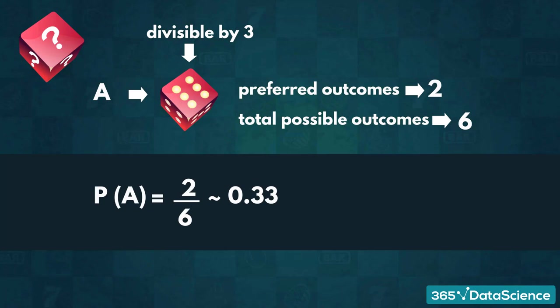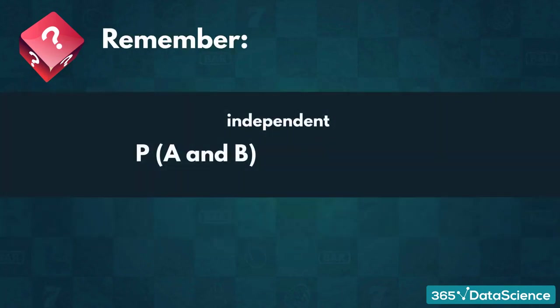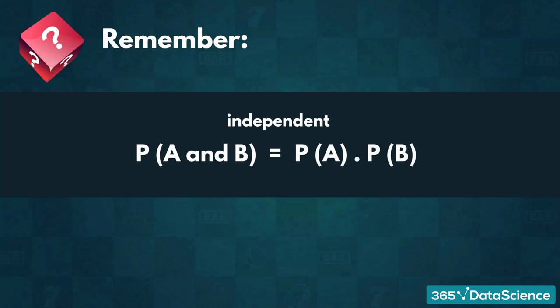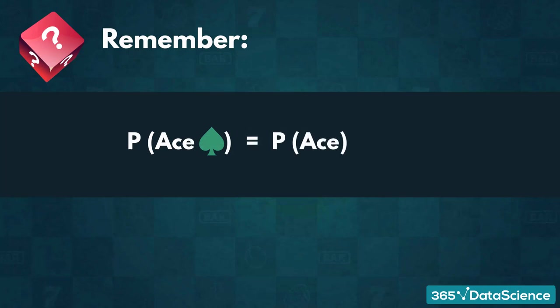Note that the probability of two independent events occurring at the same time is equal to the product of all the probabilities of the individual events. For instance, the likelihood of getting the ace of spades equals the probability of getting an ace, times the probability of getting a spade. In a later lecture, we are going to define what we mean by 'independent.' But for now, let's observe some more examples of probability.